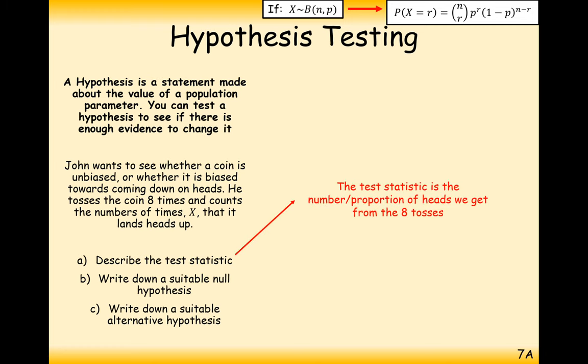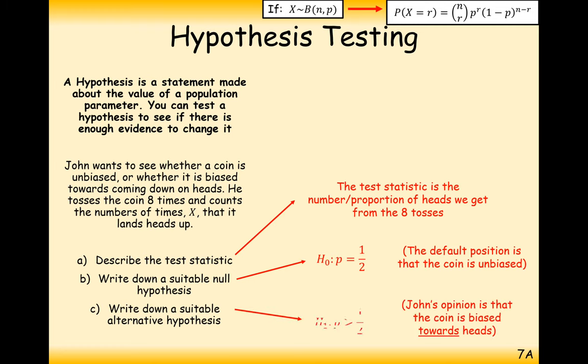The test statistic here will be the number or the proportion of heads that come out after 8 tosses. The null hypothesis will be a fair coin. And the alternative hypothesis will be towards heads, so the probability will be greater than 1 half.